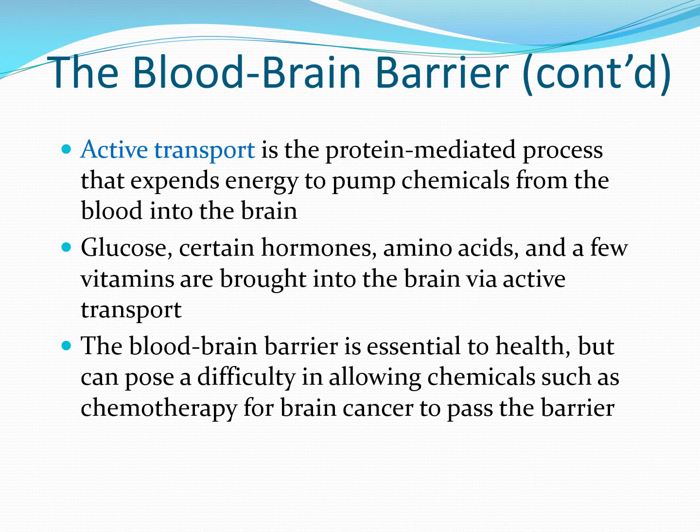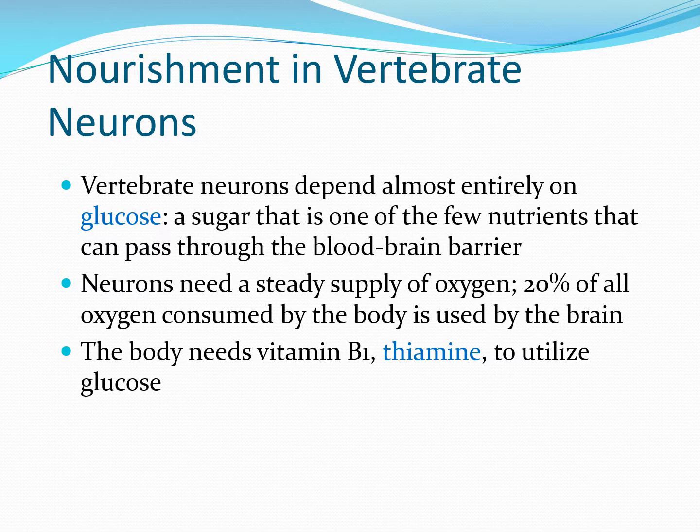The blood-brain barrier is essential to health, but it also poses some problems — some chemicals don't get through that it would be helpful if they could. The chemicals used in chemotherapy don't pass through the blood-brain barrier. So if someone has brain cancer and it's really going to cause a problem, we have to go in surgically because there's no chemotherapy that will help.